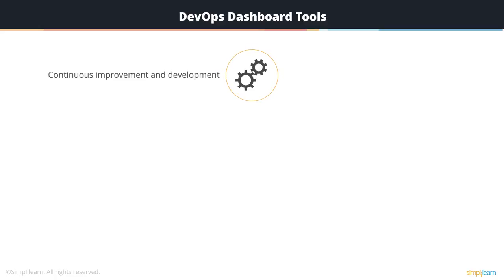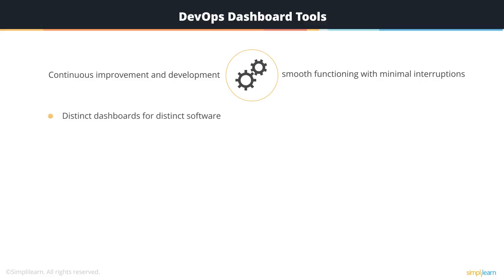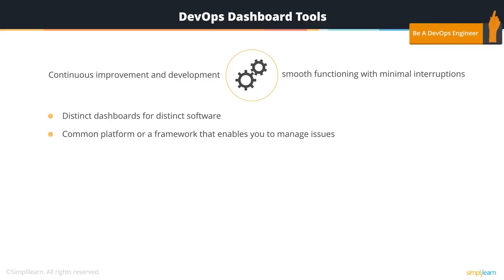The underlying virtues of implementing DevOps are continued improvement and development. The development and IT operations teams are expected to collaborate and be active participants in this collaborative and innovative process. The objective overall is to ensure smooth functioning of the application with the least interruptions. Ultimately, a dashboard is a common platform or framework that enables you to manage issues. It is important to nurture a culture that encourages adoption of the DevOps approach and enables self-learning and self-improvement among software developers and operations engineers on a regular basis. The objective helps structure the metrics for tracking the overall development process.